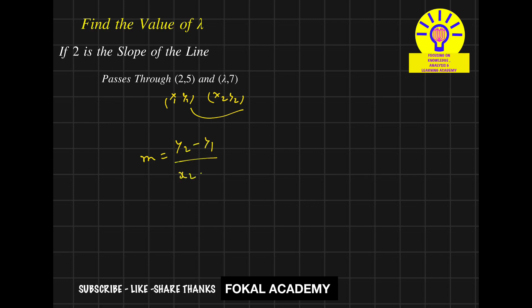Now substitute these two values. We get (7 minus 5) over (lambda minus 2), and that equals the slope of 2.